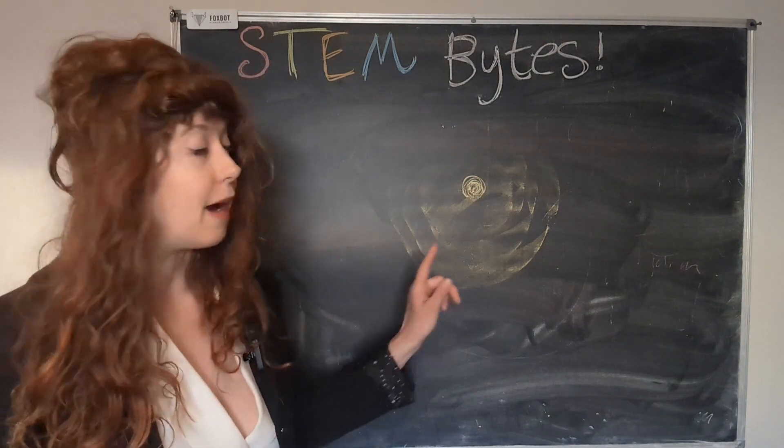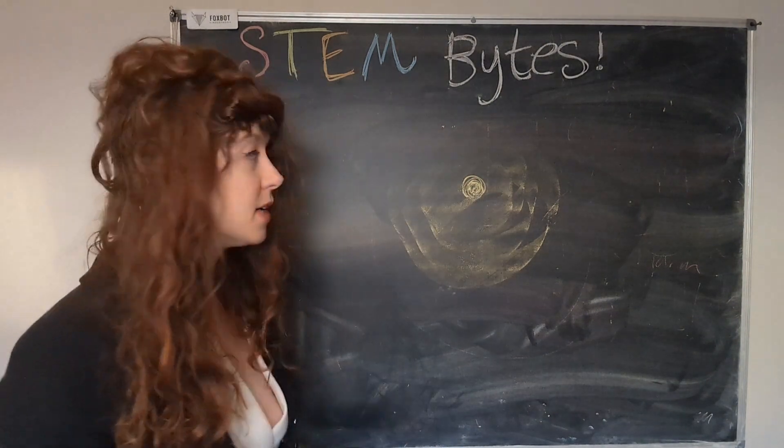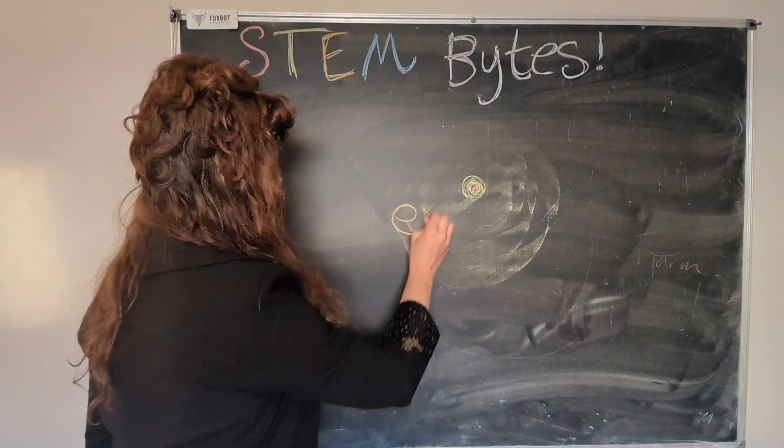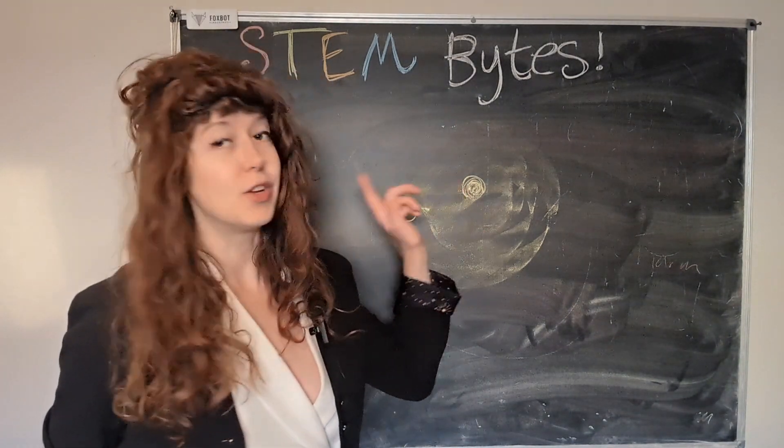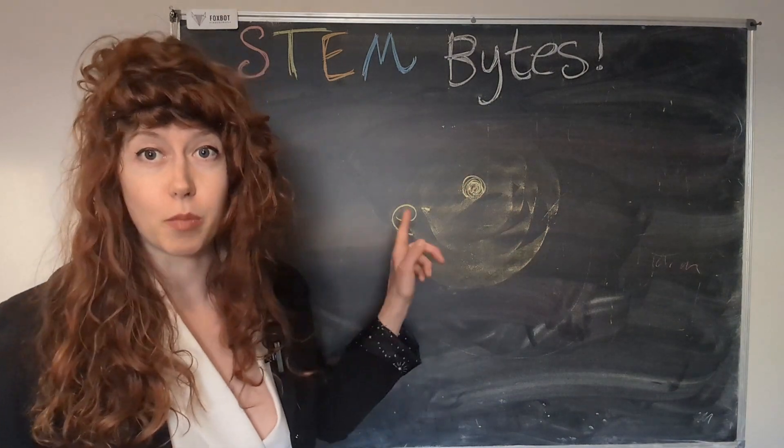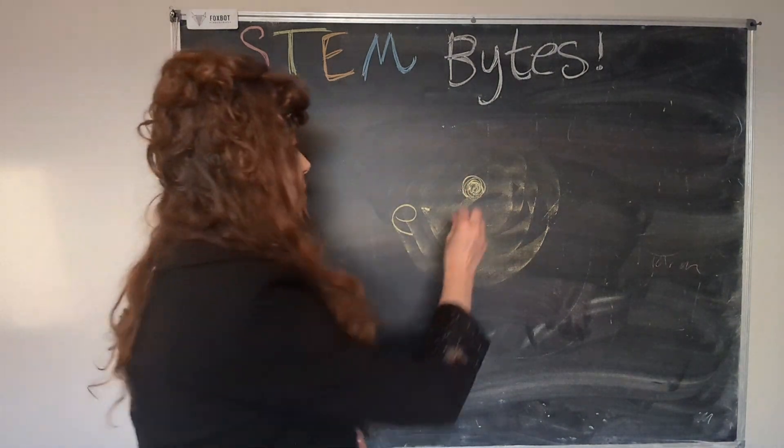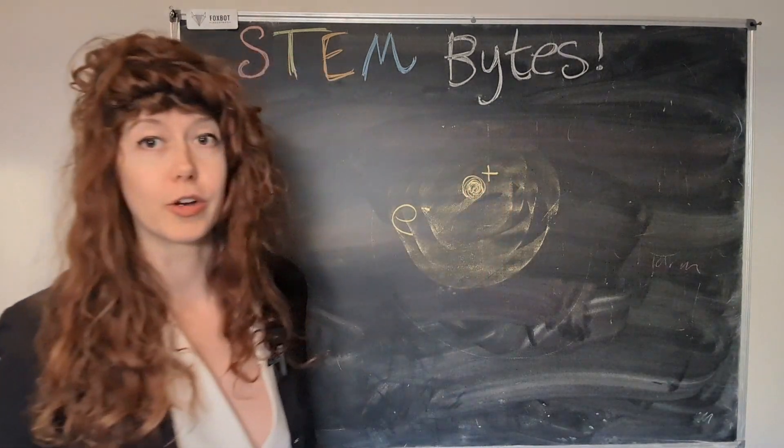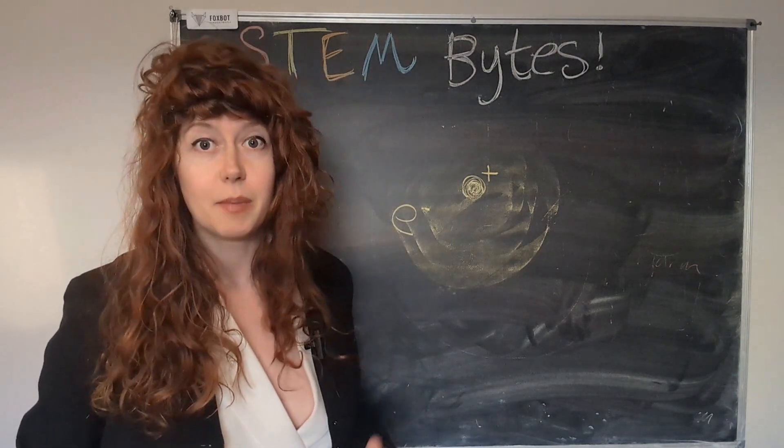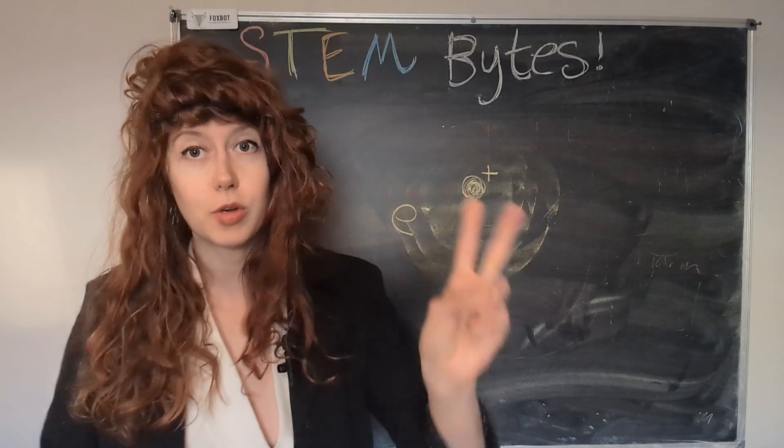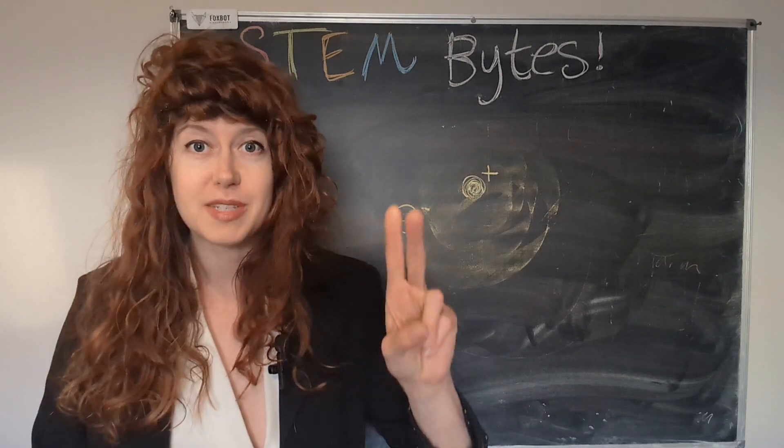The reason why we have the electron cloud is because electrons are negatively charged. And the nucleus is made up of protons and neutrons, which has a positive charge. And so electrons are attracted to the nucleus because of the two different types of charges, opposites attract.